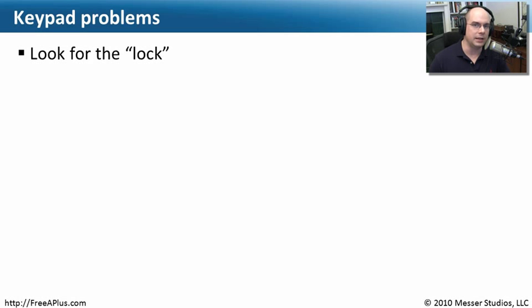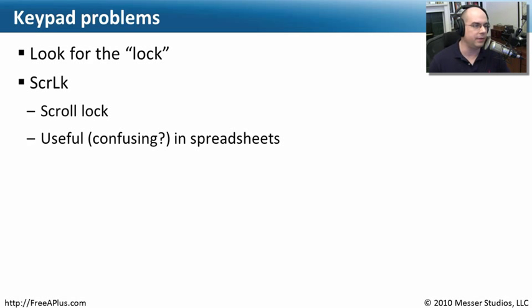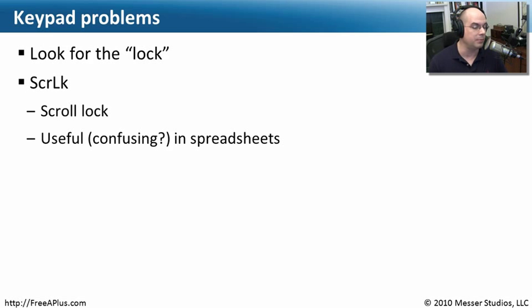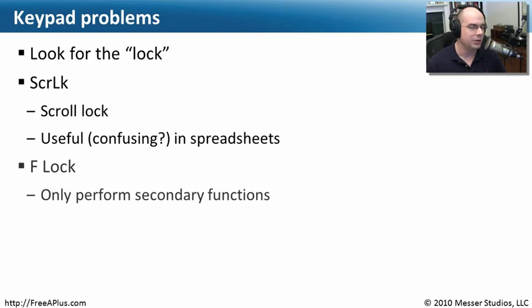Look for number lock, scroll lock, and function lock capabilities. Scroll lock is on every computer these days, but people don't really use it very much. If it's turned on, you may find that instead of your arrow keys moving around properly in a spreadsheet, the spreadsheet may be moving around your cursor, which is a little bit backwards — and that may be because your scroll lock is turned on.